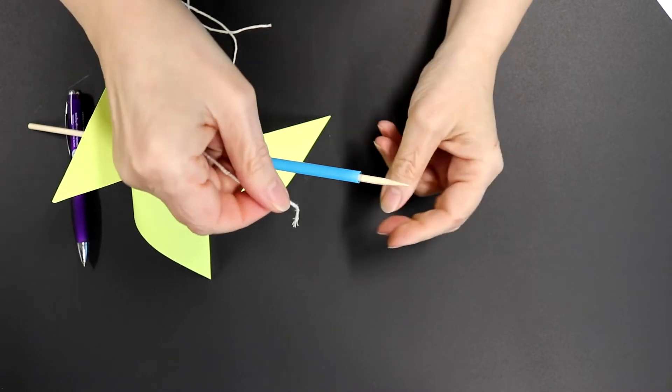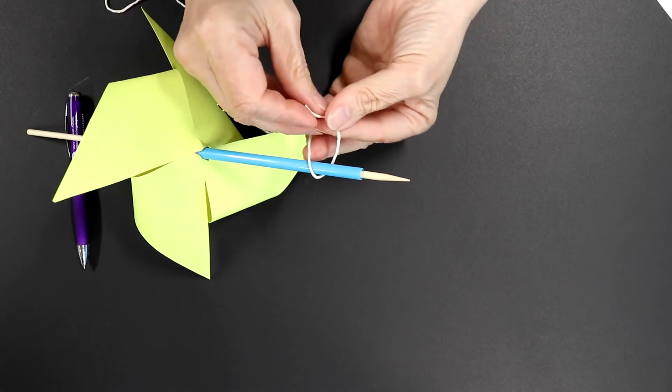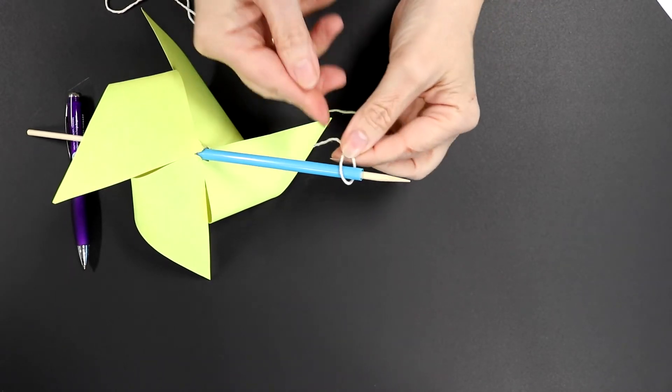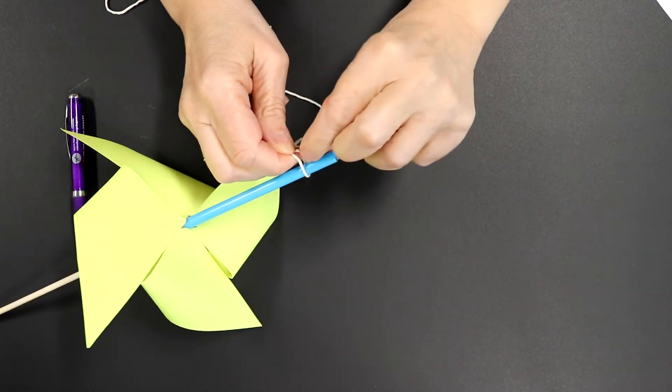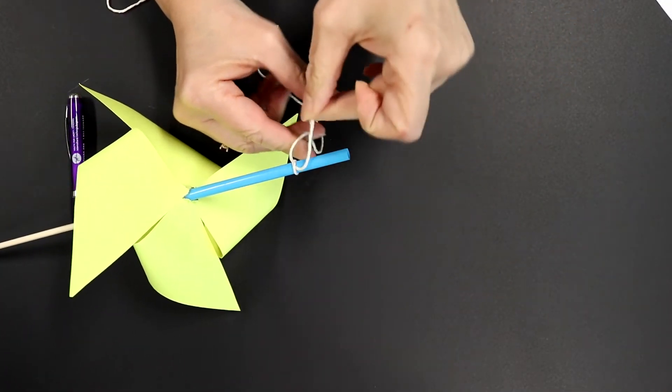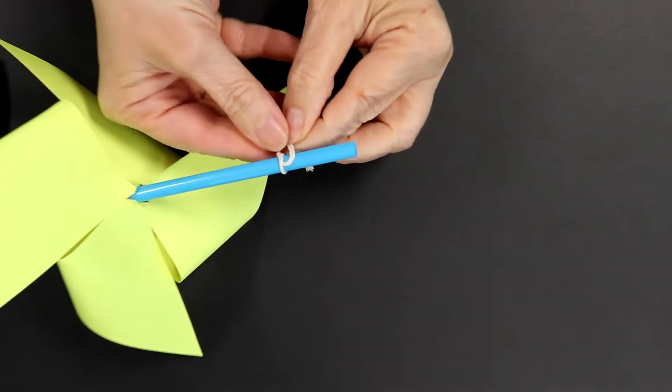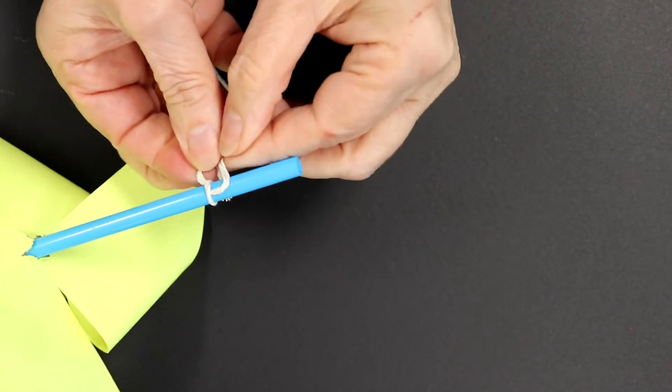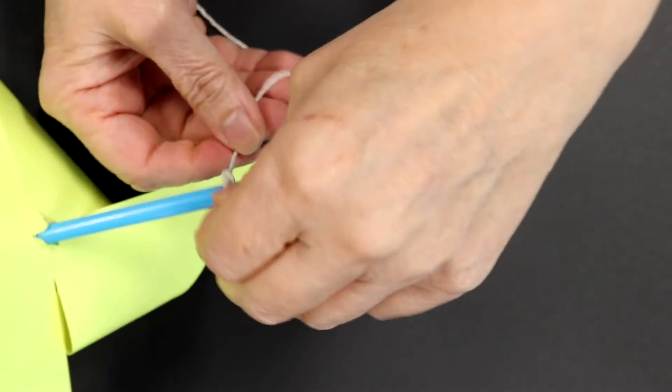Now the next thing you need to do is take your string and tie a knot around the end of the straw. I'm going to make a hole like there. You make a circle and pull it through. And then you're going to make another little circle like this and knot it. So you'll pull it through like this and tie it off.